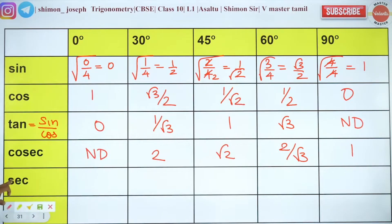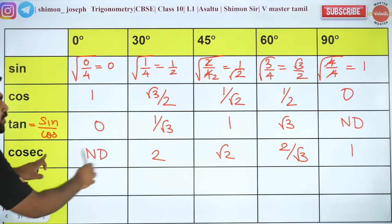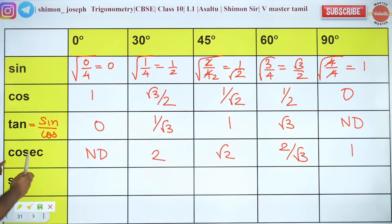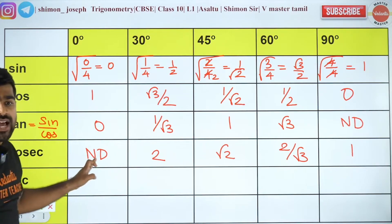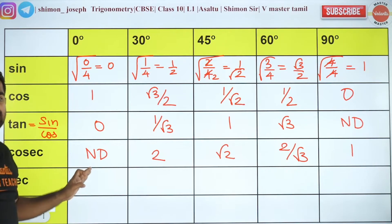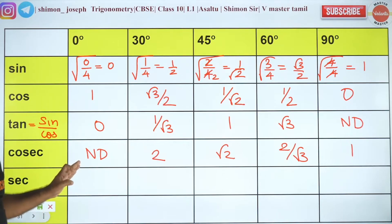Now for secant and cosecant — these are reciprocal pairs. Short cut: secant and cosecant are just the reverse of cos and sin respectively.